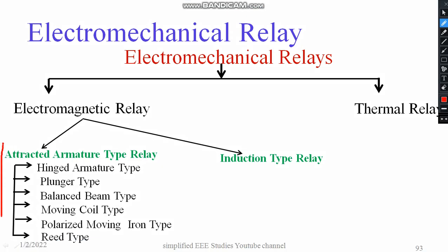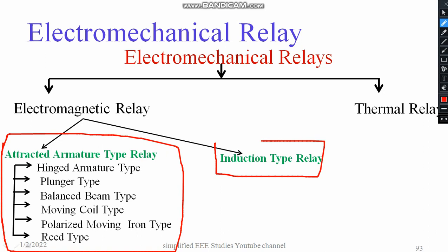In lecture number 8, I discussed about attracted armature type relay in detail — how does it work, what are the types like hinged armature type, plunger type, balanced beam type, moving coil type, polarized type, and reed type. In this video, I am going to discuss induction type relay in brief, with help of a suitable diagram and brief explanation in a simple manner.